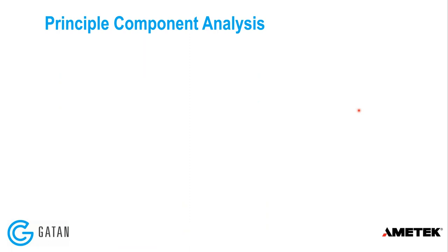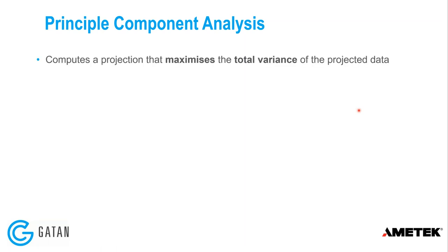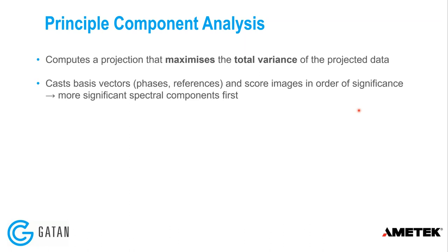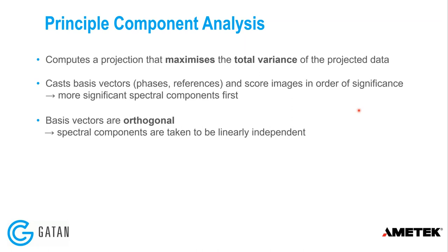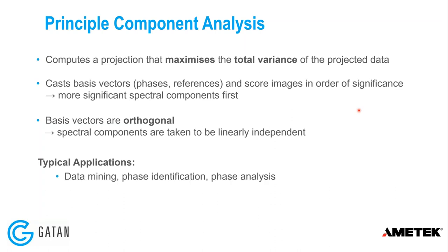So what about principal component analysis in particular? PCA is a particular flavor of multivariate analysis. It computes a projection that maximizes total variance in the projected data, and casts basis vectors and score images in order of significance, so the most significant spectral components come first. The basis vectors are orthogonal, meaning spectral components are taken to be linearly independent — an important assumption. Typical applications include data mining, phase identification, phase analysis, noise filtering, and data compression.